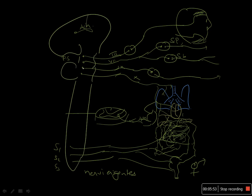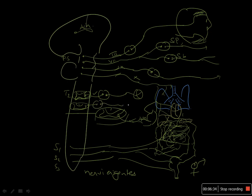For sympathetic outflow, which is generally thoracolumbar, the preganglionic sympathetic nerve arises from the lateral horn of the spinal cord, for example at the T2 segment, and forms the sympathetic ganglia — for instance, supplying the heart. Preganglionic sympathetic fibers are also cholinergic. Additionally, some postganglionic sympathetic neurons supplying the sweat glands are also cholinergic.